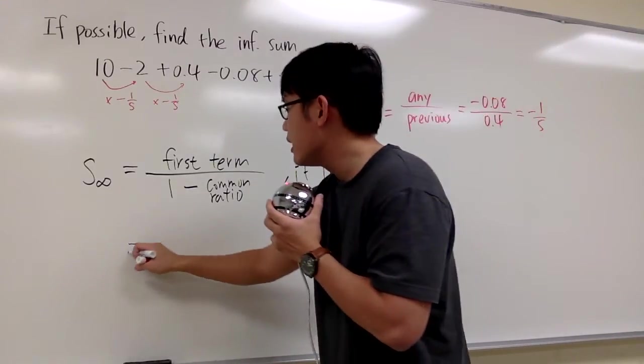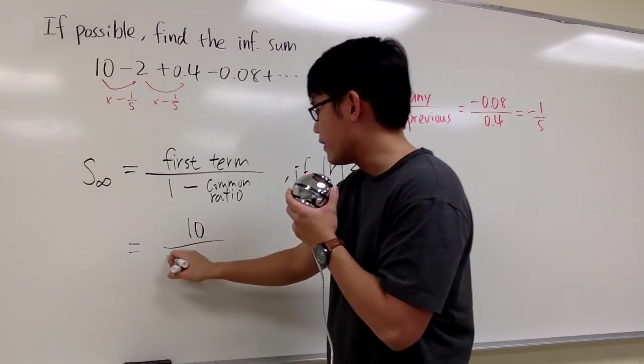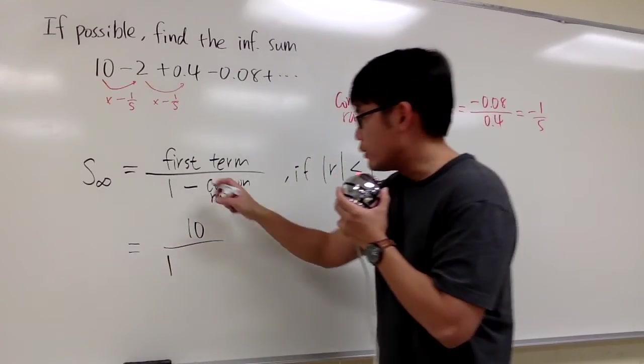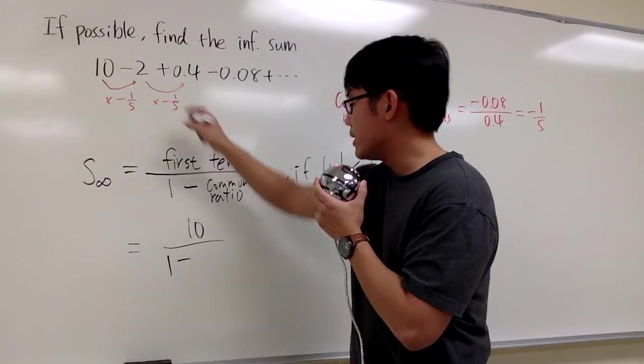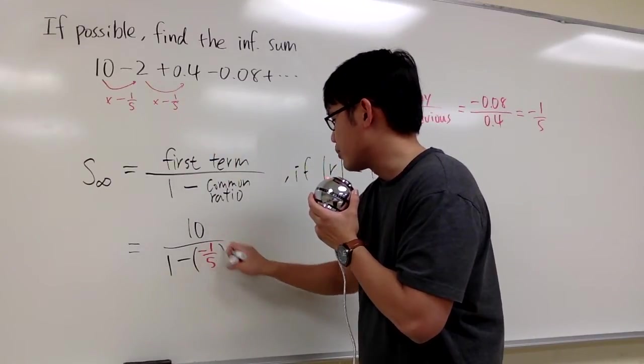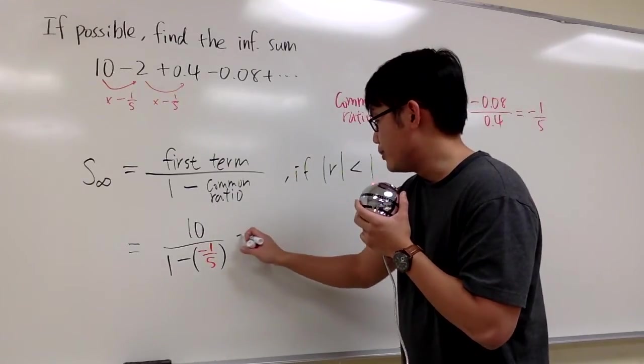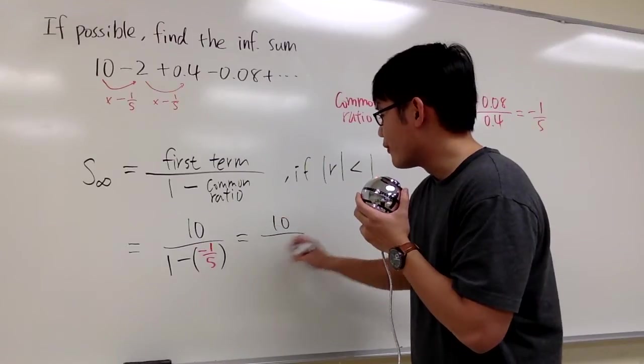Let's go ahead and compute it. The first term is 10 on the list, then we have the 1—it's always the 1—and then we minus the common ratio. Be careful with this: it's negative 1 over 5, and we'll put that in parentheses. That's pretty much our setup.